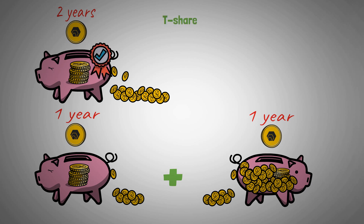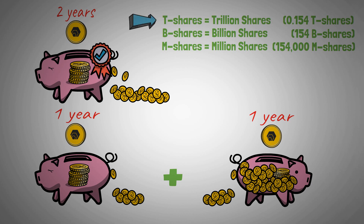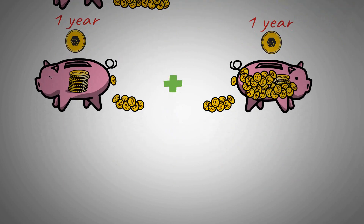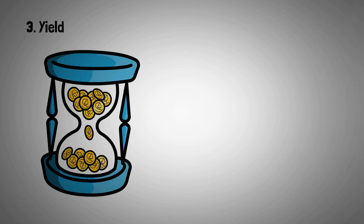It's also important to know that T-shares stand for trillion shares. When you make a smaller stake and don't receive a full T-share, people speak of B-shares (billion shares) or M-shares (million shares). As time goes by, it's going to get harder and harder to get a full T-share, so people will speak more of B-shares. During the whole duration of the contract, you can monitor how much these T-shares make in yield on a daily basis. At the moment of making this video, the average yield of all stakes is about 38% and the average stake duration is about 6.6 years — pretty attractive numbers.